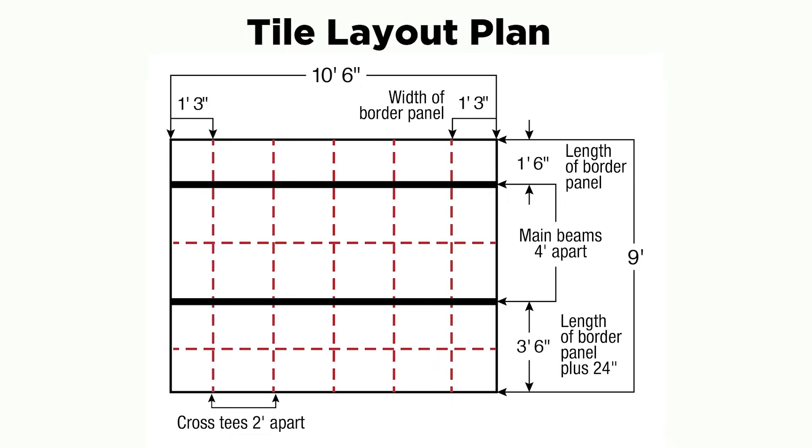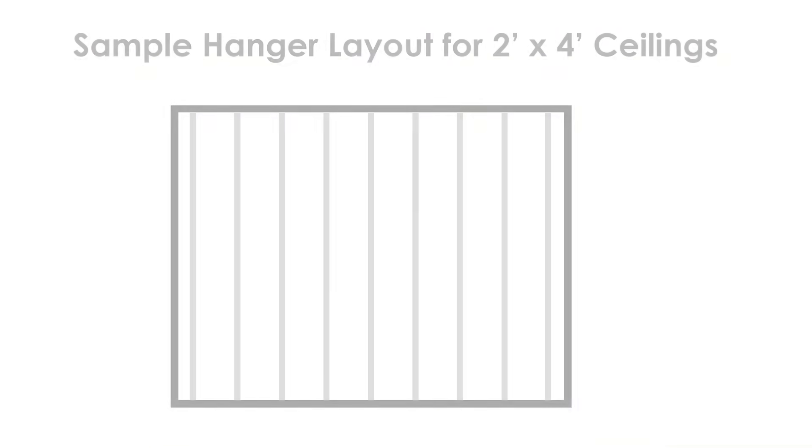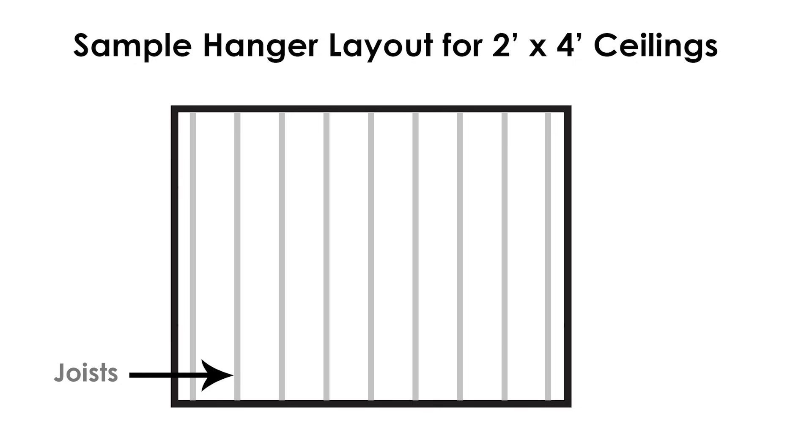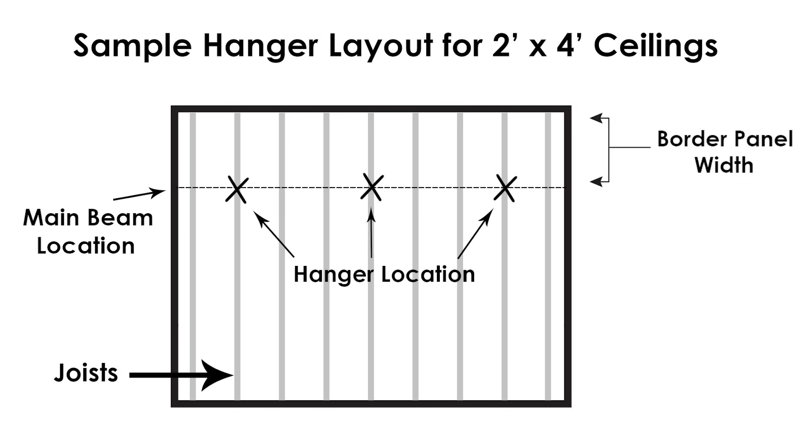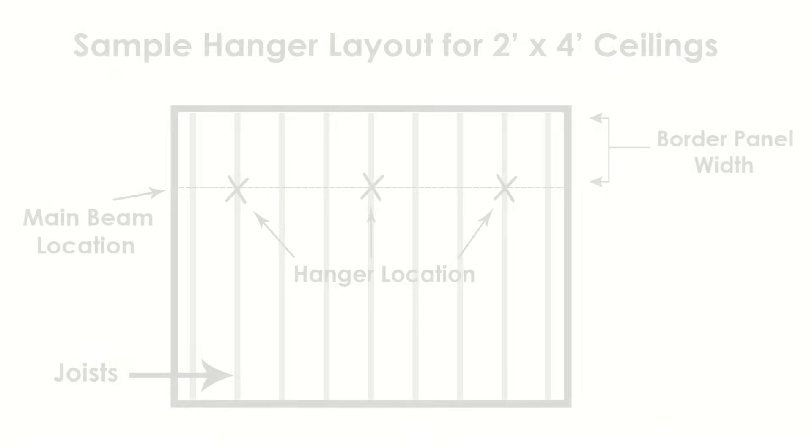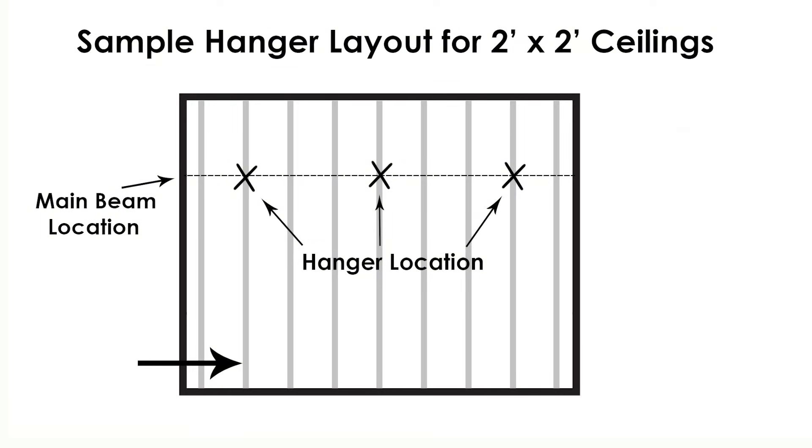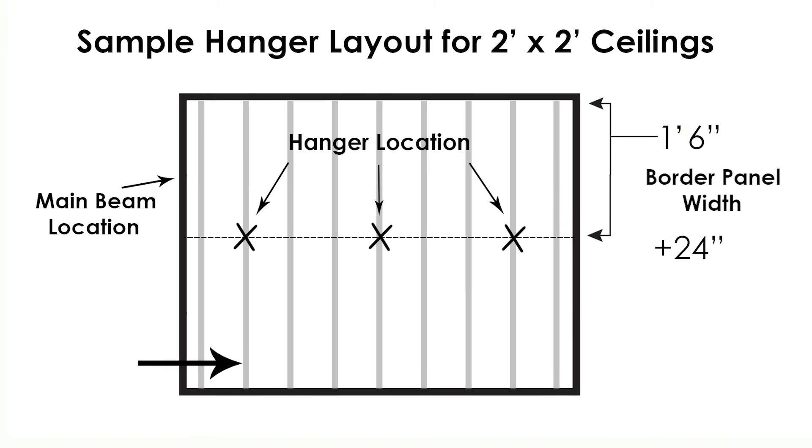Hanging Point Layout: Now that you have your tile layout planned, you'll need to lay out and mark your hanging points. These hanging points will support your main beams. The first row of main beams in a 2 foot by 4 foot panel installation should be hung the width of the border panel size away from the wall. In a 2 foot by 2 foot panel installation, the first row of main beams can be hung the width of the border panel or a border panel width plus 24 inches from the wall. Please refer to your ceiling layout for these dimensions. Remember, hanger locations should not be spaced more than 4 feet apart in any direction.